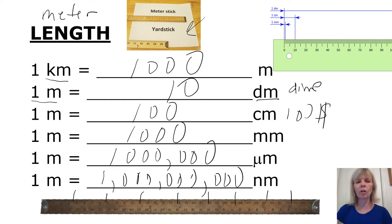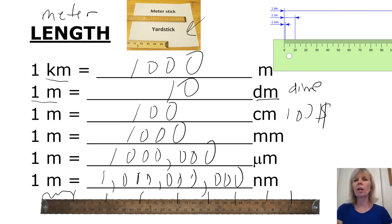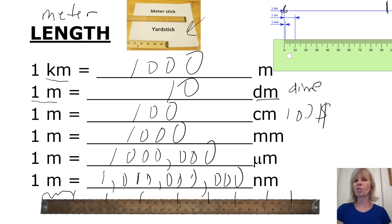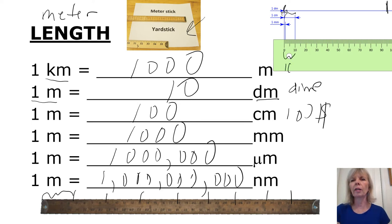One-tenth of the meter stick would be one decimeter. My ruler here shows a decimeter, and this is what your meter sticks will look like in the laboratory for measuring your height. Within a decimeter, we have 10 centimeters, so this area right here represents one centimeter. Within one centimeter, we have 10 millimeters. Everything is based on powers of 10.